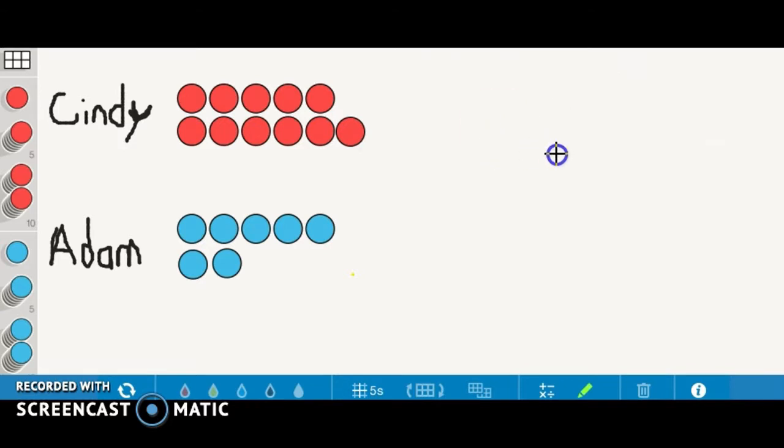First, we will start with the concrete representation. We can see that Cindy has more stickers than Adam just by looking at this drawing. Now, Adam can take his 7 stickers and count up to Cindy's amount so they can find out the difference.